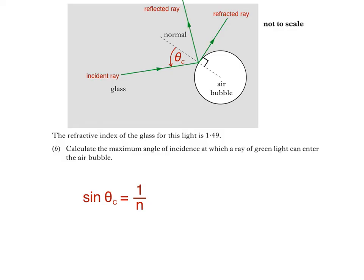Sine theta c is equal to 1 divided by 1.49, which equals 0.671, meaning that the critical angle is equal to sine to the negative 1, 0.671, which equals 42.1 degrees.